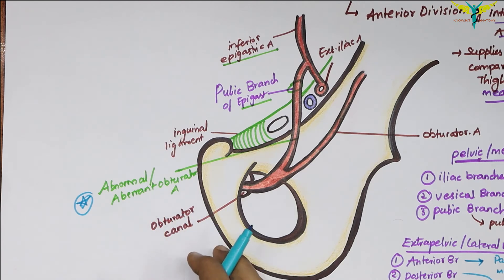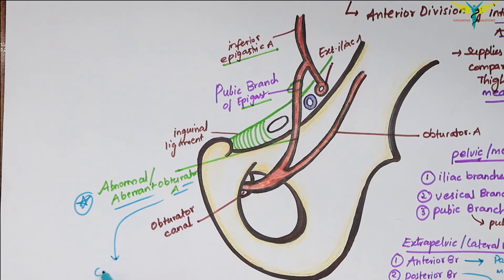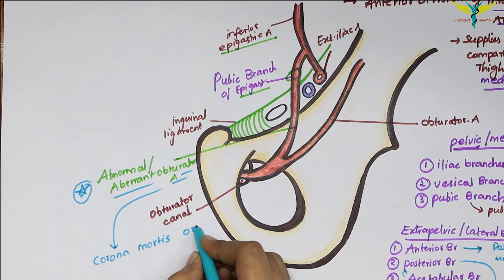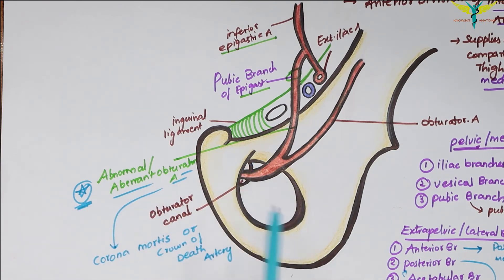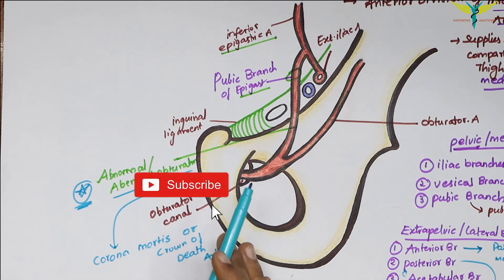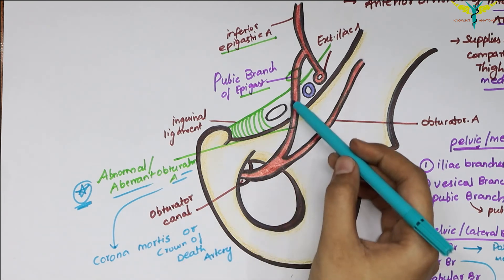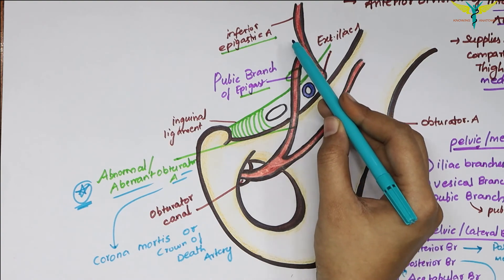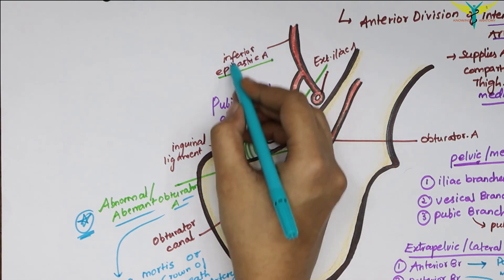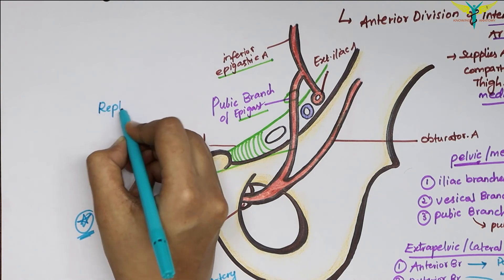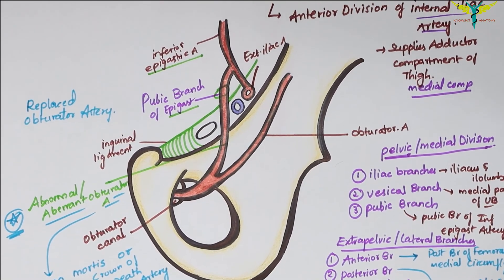This abnormal or aberrant obturator artery is also called the corona mortis, or 'crown of death' artery. Its importance lies in the risk of accidental injury during surgical procedures, causing difficult-to-stop significant bleeding. In approximately 20% of the population, the enlarged pubic branch of the inferior epigastric artery may replace the obturator artery, and this is referred to as the replaced obturator artery.